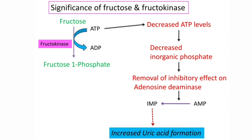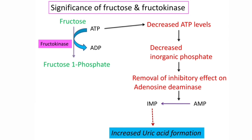Coming to the significance of fructose and fructokinase: fructokinase is not affected by insulin. That means it is not under the control of insulin like hexokinase, and fructokinase phosphorylates only fructose — it will not phosphorylate any other sugar. As it is not under the control of insulin, the initial step of glycolysis catalyzed by hexokinase is bypassed. In fructose metabolism, fructose is converted into fructose-1-phosphate, then into DHAP and glyceraldehyde, which are converted into intermediates of glycolysis — so the hexokinase step, the first regulatory step of glycolysis, is bypassed.